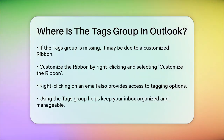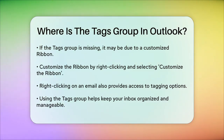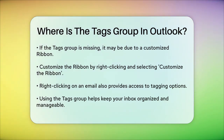By using the Tags group in Outlook, you can keep your inbox organized and ensure that important emails don't get lost in the mix. So next time you're looking to categorize or prioritize your emails, head over to the Home tab and find the Tags group. It's there to help you stay on top of your email management.